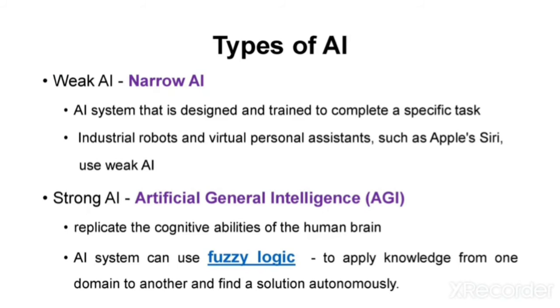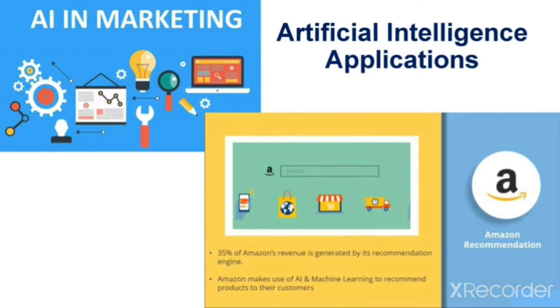There are two types of AI. One is weak AI — a system that is designed and trained to complete specific tasks. The second is strong AI — a system that replicates the cognitive abilities of the human brain.